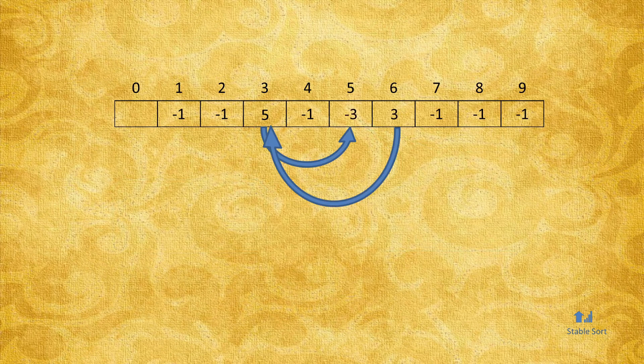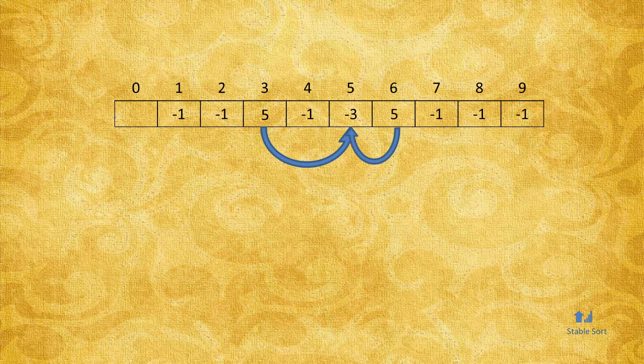Since these path chains can get long, one optimization that we could make is to link directly to the end of the chain, thus keeping the path as short as possible. This optimization is called path compression.